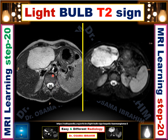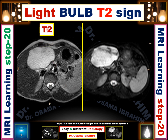In MRI, bone appears dark. The CSF appears bright on T2 — so this is T2. On the heavily T2, the CSF also appears as a high signal, but the background becomes significantly darker.